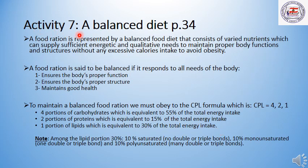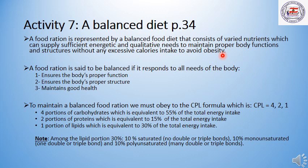Now, to start Activity 7: A Balanced Diet. Please open your books to page 34. What is a food ration? A food ration is represented by a balanced diet that consists of varied nutrients which can supply sufficient energetic and qualitative needs for maintaining proper body functions and structures, without any excessive calorie intake to avoid obesity.